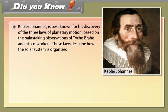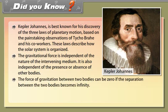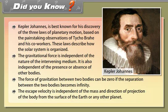Did you know? Kepler-Johannes is best known for his discovery of the three laws of planetary motion based on the painstaking observations of Tycho Brahe and his co-workers. These laws describe how the solar system is organized. The gravitational force is independent of the nature of the intervening medium. It is also independent of the presence or absence of other bodies. The force of gravitation between two bodies can be zero if the separation between the two bodies becomes infinity. The escape velocity is independent of the mass and direction of projection of the body from the surface of the earth or any other planet.